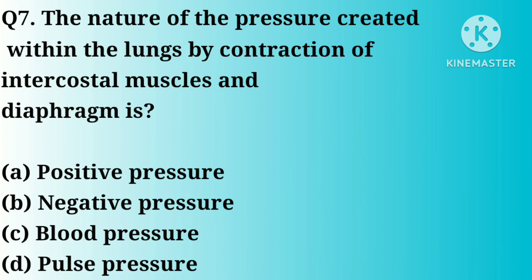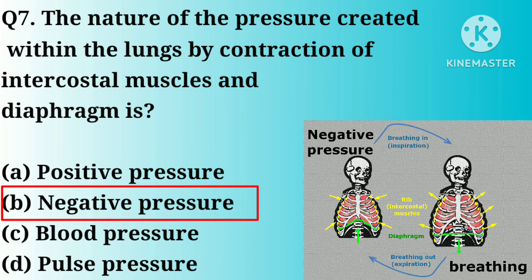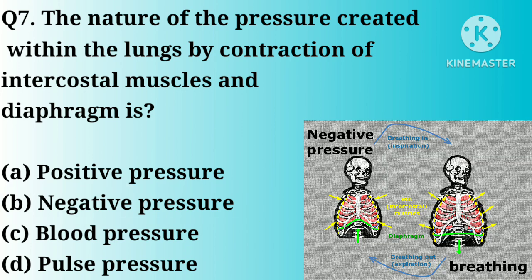Q7. The nature of the pressure created within the lungs by contraction of intercostal muscles and diaphragm is: option A, positive pressure; B, negative pressure; C, blood pressure; D, pulse pressure. Great answer, option B.